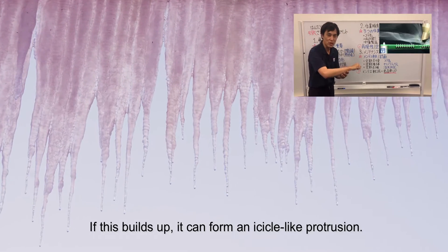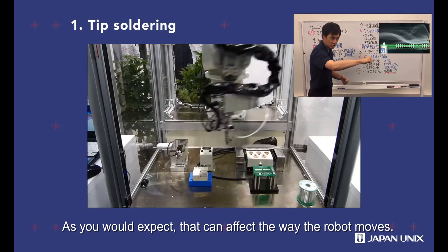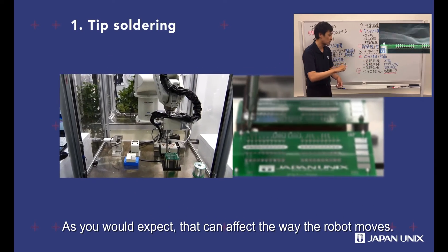If this builds up, it can form an icicle-like protrusion. As you would expect, that can affect the way the robot moves.